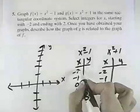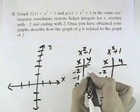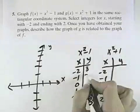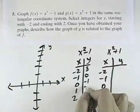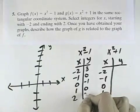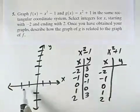Well, with x squared minus 1, if x is negative 2, squared is 4, minus 1 is 3. Negative 1 squared is 1, minus 1 is 0. 0 squared is 0, minus 1 is negative 1. 1 squared is 1, minus 1 is 0. 2 squared is 4, minus 1 is 3.